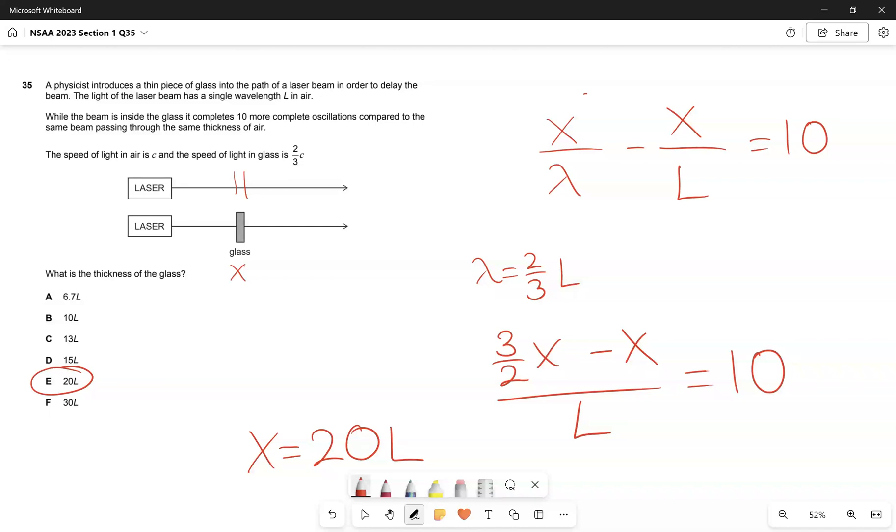You could find that there's actually 30 cycles or 30 wavelengths completed in glass and 20 completed in air if you wanted to, but we don't have much time so we just have to take the answer we find for the thickness of glass, which is 20 l. Hopefully that makes sense, but if you have any questions please do let me know.